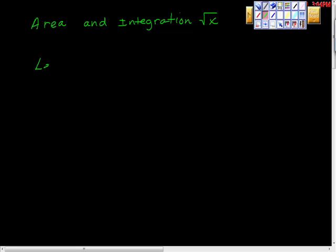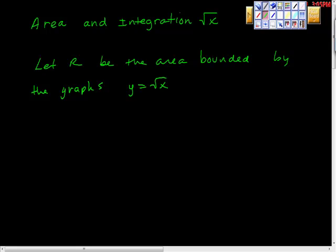So it says, let R be the area bounded by the graphs y equals square root of x and y equals x halves. And we're supposed to find the area of R.